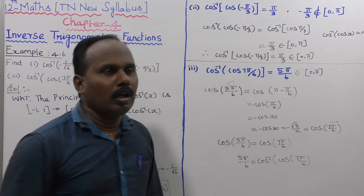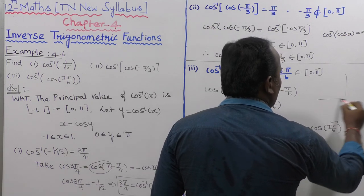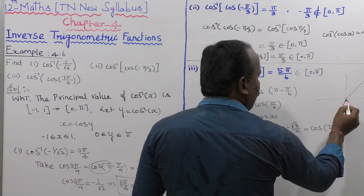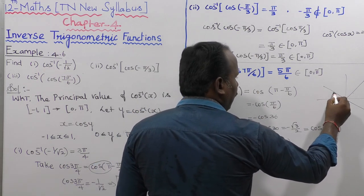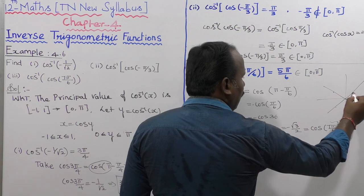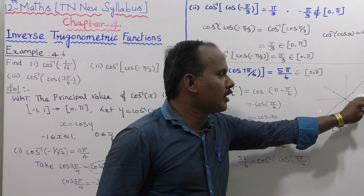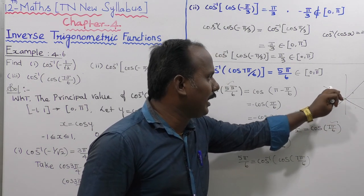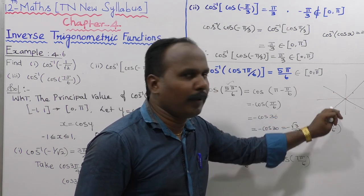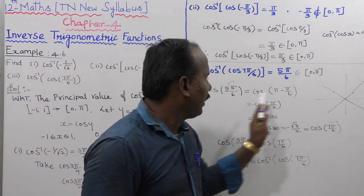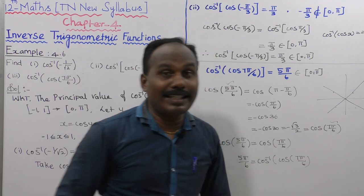On the graph, in the first and fourth quadrants cos is positive, and in the second and third quadrants cos is negative. So -√3/2 falls in the second quadrant. Converting the 30-degree reference angle confirms the answer is 5π/6.